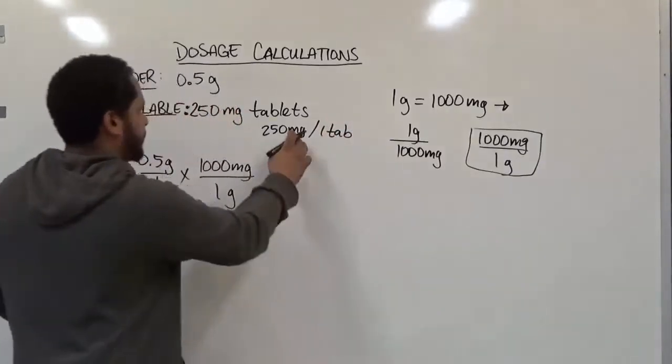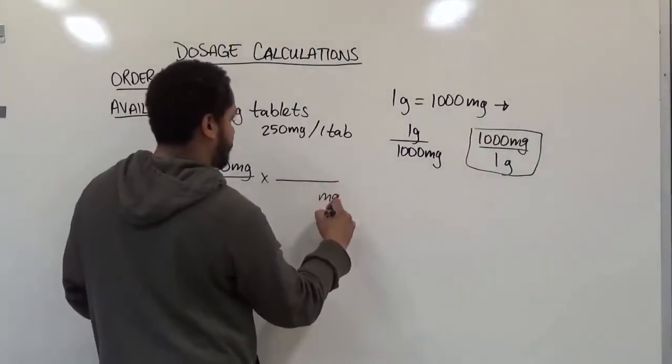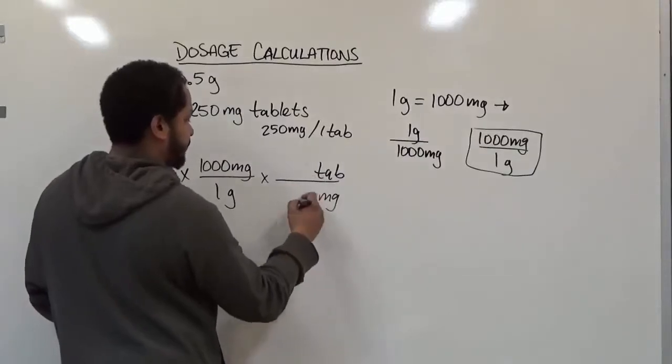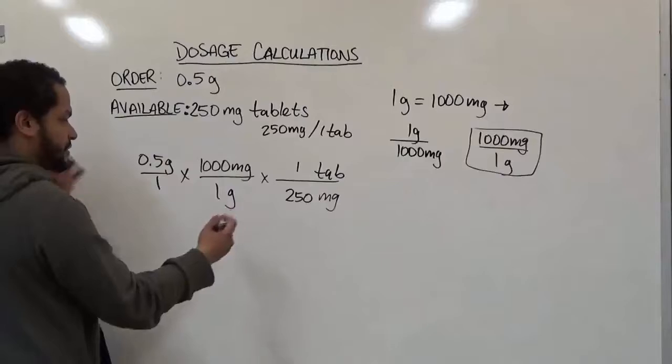In this case, we need 250 milligrams as the denominator so the milligrams cancel out. The tablet is our numerator so it converts to tablet form. Here are our 250 and 1, and now we're ready to multiply.